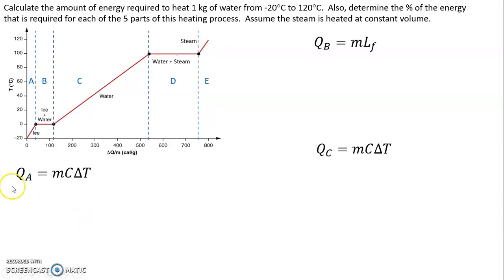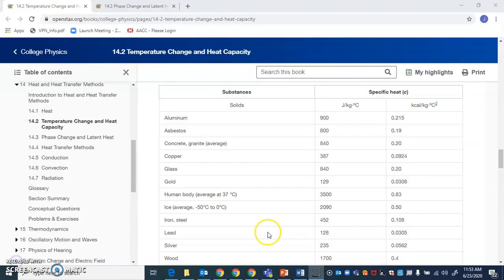So for the first part we use our equation QA, and A is just standing for region A, equals MC delta T. In order to do this we need to know what the specific heat capacity for the ice is. So we're going to look that up. Here you can see the specific heat capacity is 2,090 joules per kilogram degree C. This is in table 14.1 in section 14.2 of your textbook.